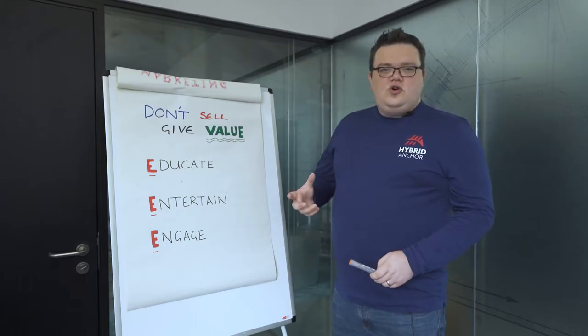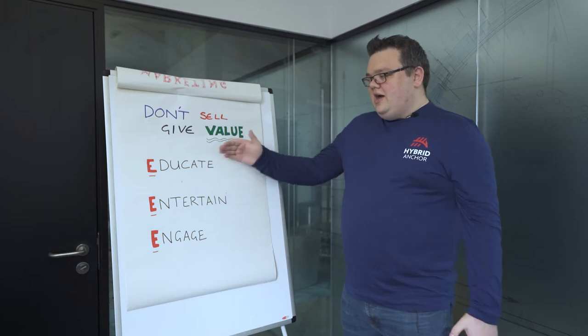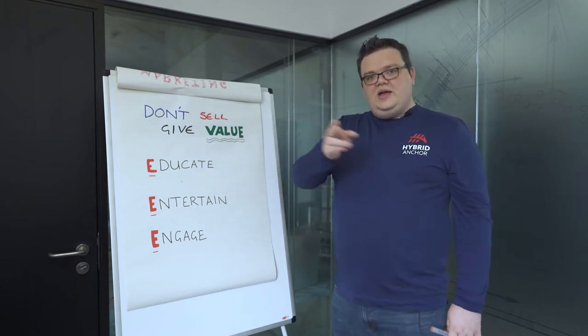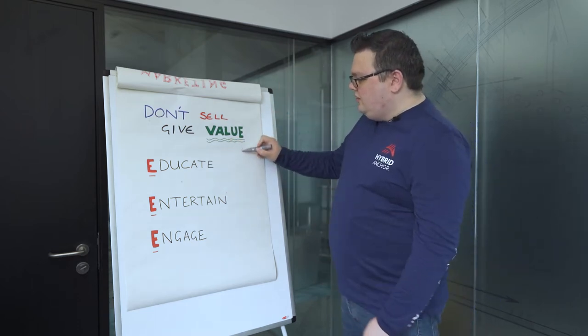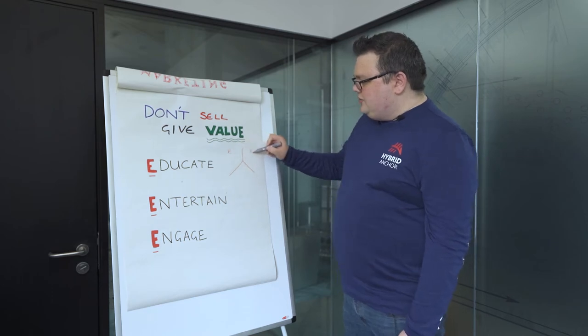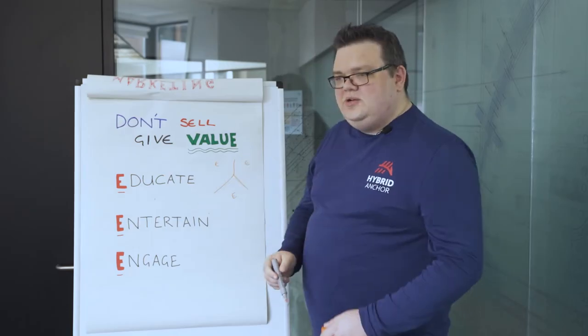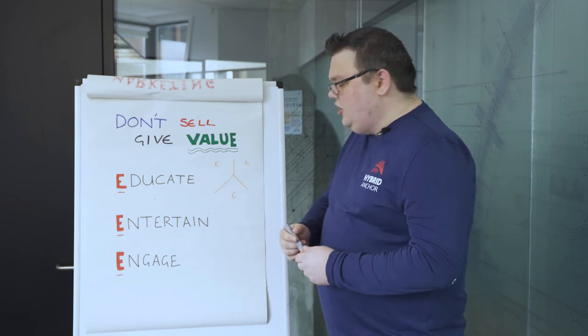So when you're approaching your content, I think you should look at it in that lens. Build up a diagram, like an upside down Y, like this. And work out what camp does it sit in. Does it sit in education, entertainment or engagement?